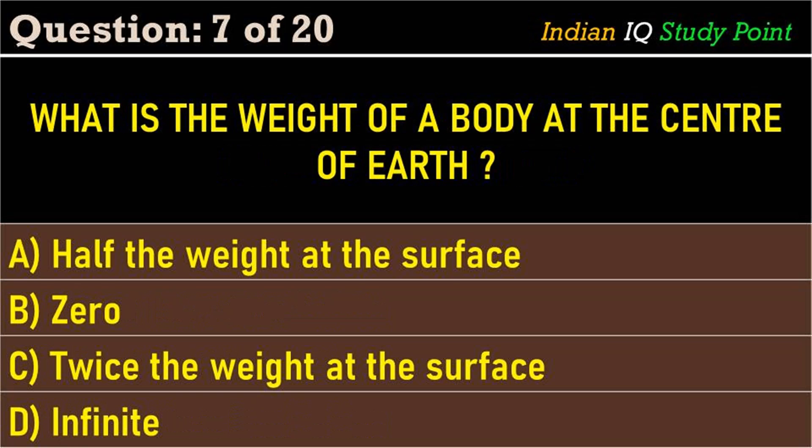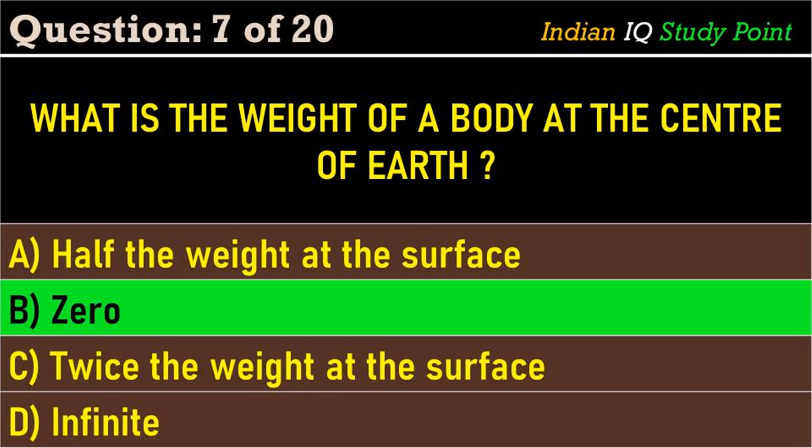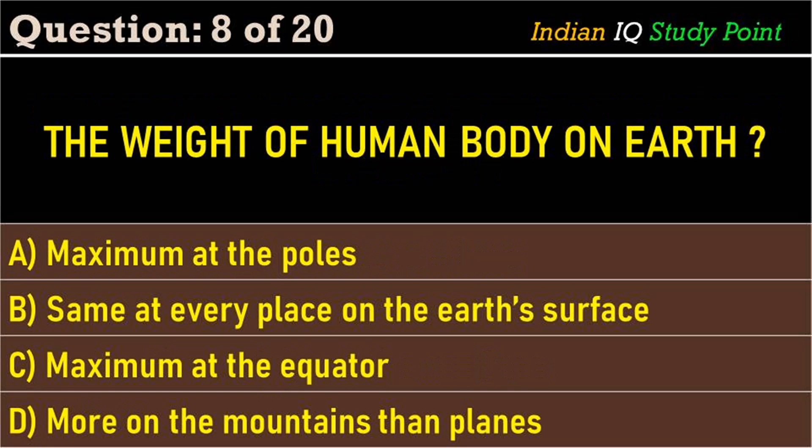Coming to the next question: what is the weight of a human body at the center of the earth? Option A: half the weight at the surface. Option B: zero. Option C: twice the weight at the surface. Option D: infinite. The correct answer is option B: zero.